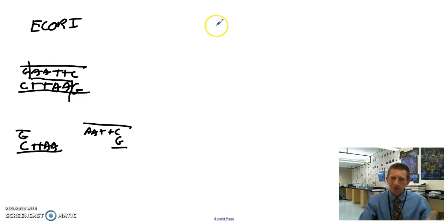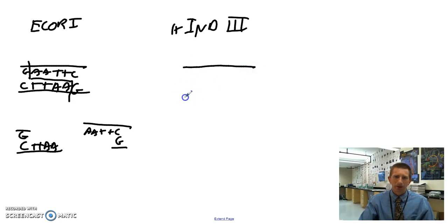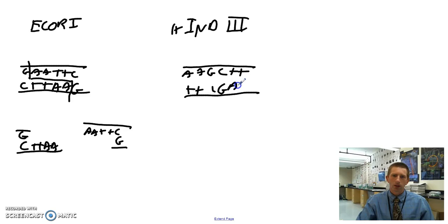And then the last restriction enzyme we're going to talk about and that we're going to use in class is HindIII. So we have our DNA and it's going to clamp on and it's going to search for this sequence: A-A-G-C-T-T. So opposite that is T-T-C-G-A-A. And then it's going to cut between the two A's. So cut the sugar phosphate backbone, cut the sugar phosphate backbone, and then break the hydrogen bonds in between to give us two sticky ends.